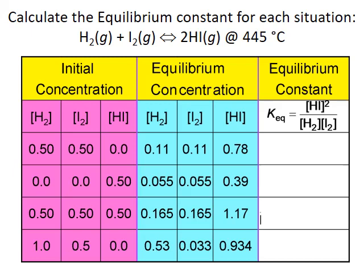Once we have the equilibrium expression, we can calculate the equilibrium constant K using measured equilibrium concentrations of our reactants and products. As long as the temperature is constant, we should get a constant value for K. As an example, let's look at our reaction between hydrogen and iodine gas again. Here we have the equilibrium expression for this reaction. We also have four different starting mixes of reactants and products, represented by the four different rows of the table.